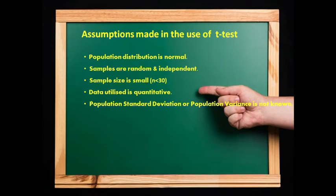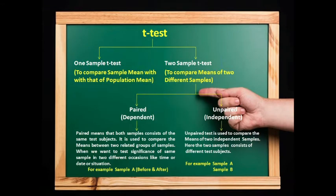Assumptions made in the use of T-test: population distribution is normal, samples are random and independent, sample size is small (n < 30), data is quantitative, and population standard deviation or population variance is not known. T-test is also of two types: one-sample T-test and two-sample T-test. One-sample T-test is used to compare sample mean with population mean. Two-sample T-test is used to compare means of two different samples, and it is further of two types: paired (dependent) and unpaired (independent).